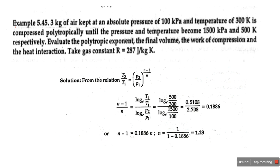The last numerical: 3 kg of air kept at absolute pressure of 100 kilopascal and temperature of 300 Kelvin is compressed polytropically. This is a polytropic process. From the polytropic index N we can determine whether the process is adiabatic, isothermal, or isobaric. The exponential value tells us which process is carrying out, so we call it a polytropic process.